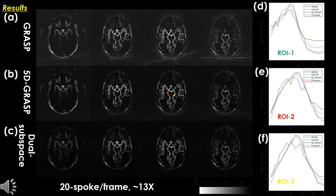Here are the 20-spoke-per-frame image reconstruction results, corresponding to 13-fold acceleration. It can be clearly seen that the proposed dual subspace MRI has the highest image quality among all the tested approaches. In addition, the signal intensity time curves prove that the proposed scheme does not induce temporal resolution loss.